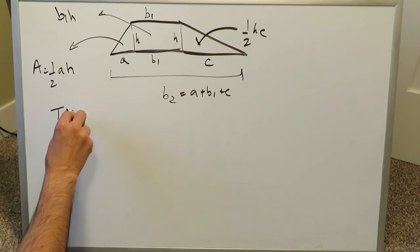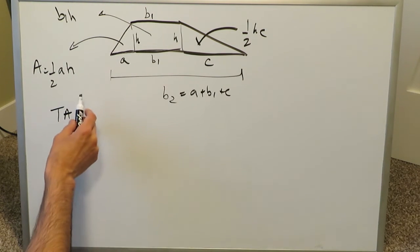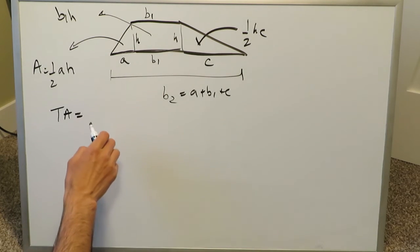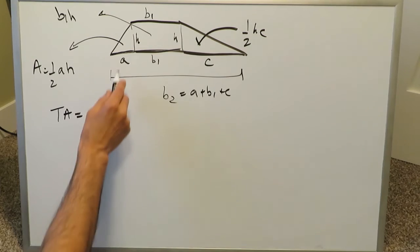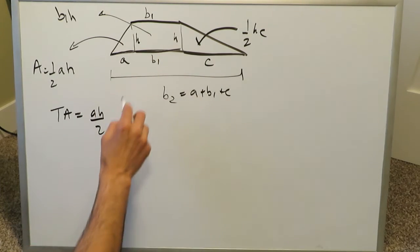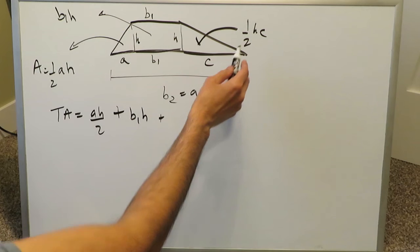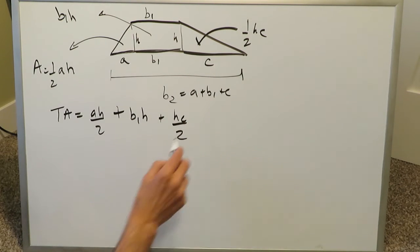Now we have a total area of this trapezoid or trapezium, which is comprised of three different individual areas, and let's add them up. We have this one area right here, a, h over 2, which is this triangle. Then we have this b1, h, which is the rectangle. And then we have that h, c over 2.